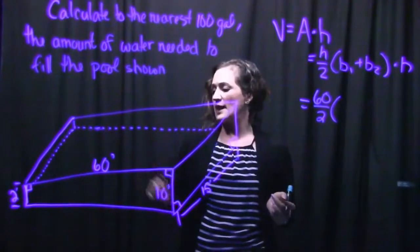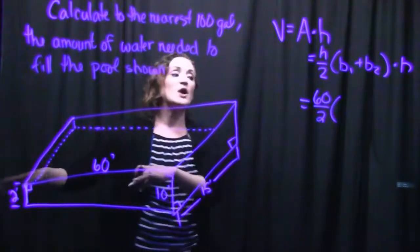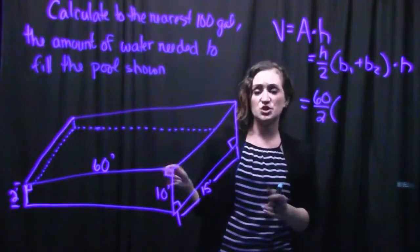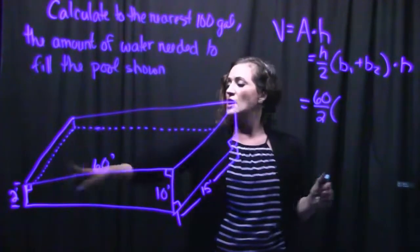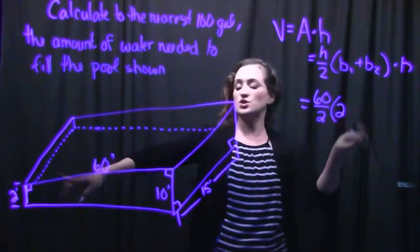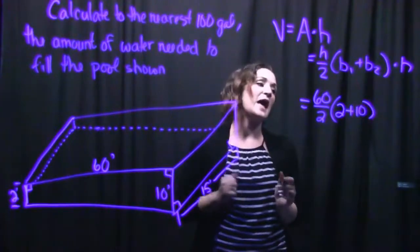And we're going to multiply that by base 1 plus base 2. It doesn't matter which one's base 1 and which one is base 2, as long as we add them both together. So I'm just going to say that base 1 is the 2 plus base 2, which is our 10.